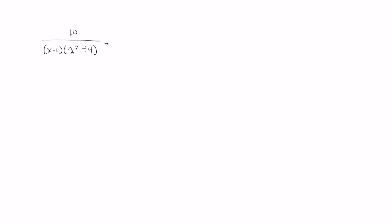So we have 10 over x minus 1 times x squared plus 4. And now let's take care of the linear factor first. So that is, I'm going to write A over x minus 1.